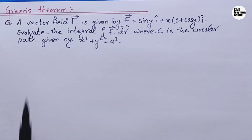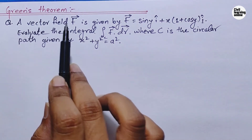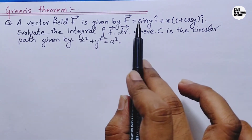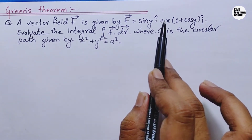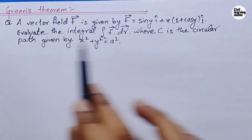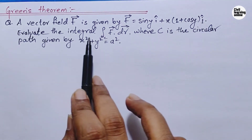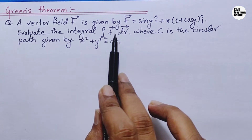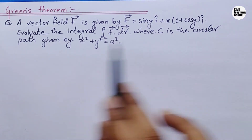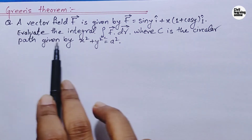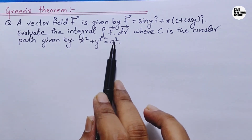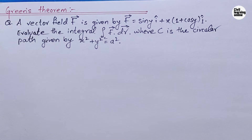The question is: a vector field F is given by F = sin(y) î + x(1 + cos y) ĵ. Evaluate the integral F·dr where C is the circular path given by x² + y² = a².